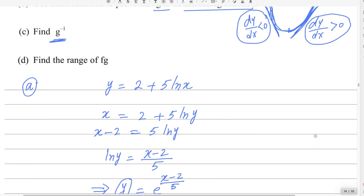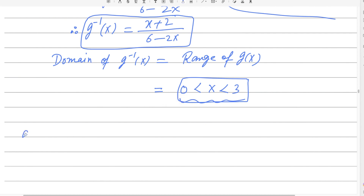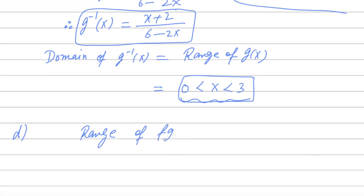For the last part D, we need to find the range of the composite function fg. To do this, take the range of g(x), which lies between 0 and 3 (exclusive), and apply those values to f(x). Apply the minimum and maximum values of the range of g(x) into f(x) to find the range of fg.